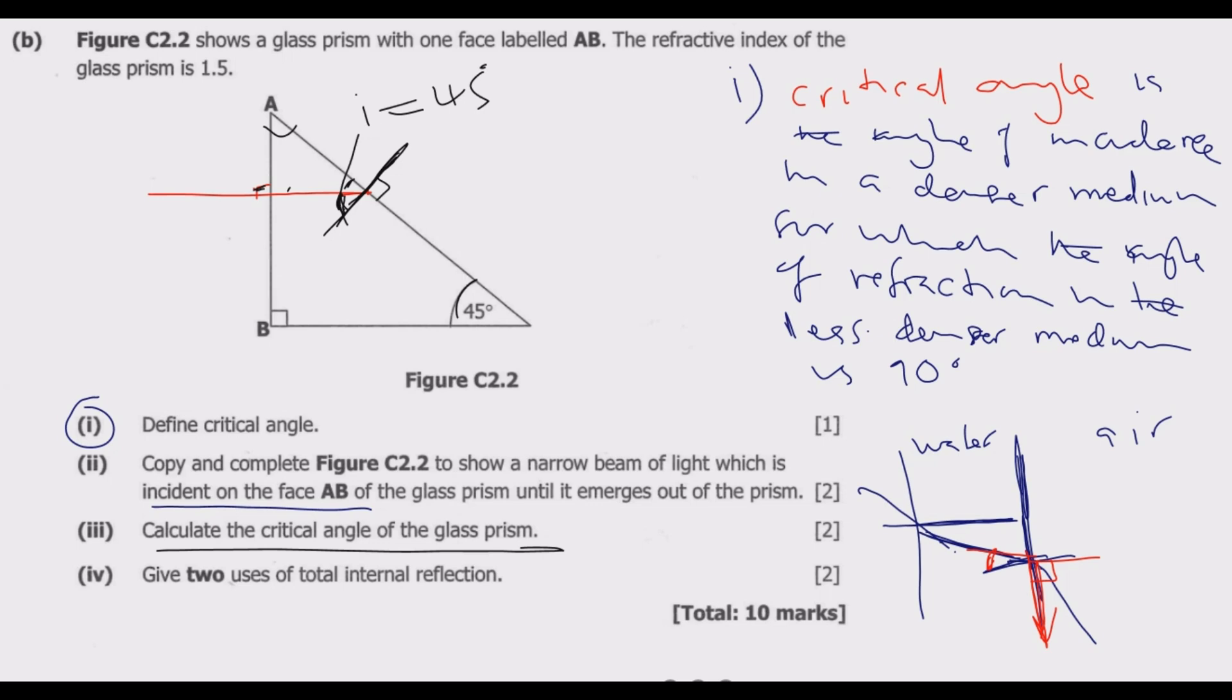If the critical angle is less than the incident angle, there will be total internal reflection. If it's greater, there will be refraction. Let me find the critical angle, which is in number 3. Critical angle is given by sine inverse of one over the refractive index, so sine inverse of 1 over 1.5.